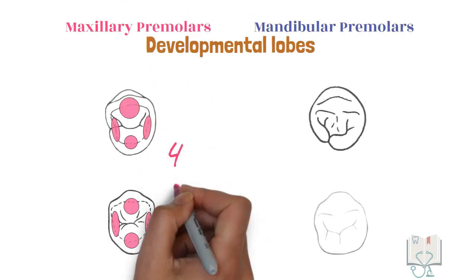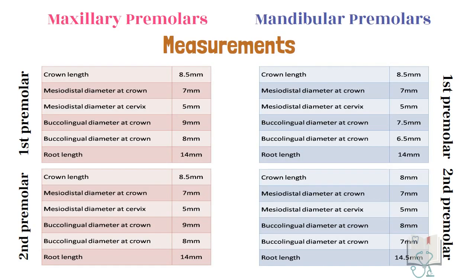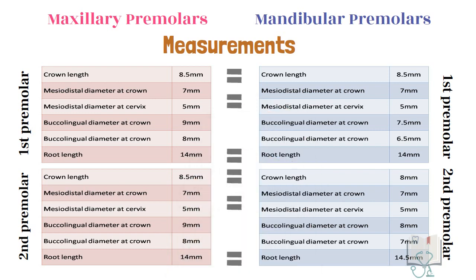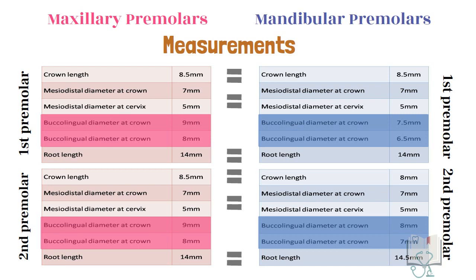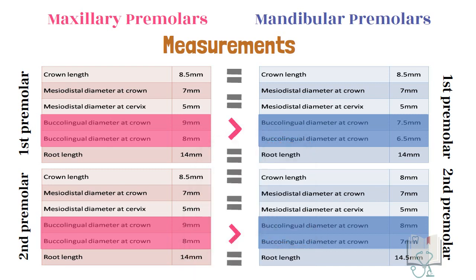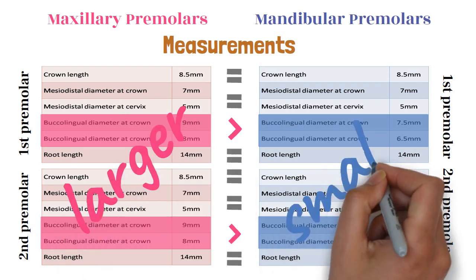Both maxillary premolars develop from four developmental lobes. However, in the mandible, only the first premolar develops from four lobes, as the second premolar develops from five developmental lobes. Coming to measurements, both maxillary and mandibular premolars are almost of equal dimensions from all aspects except buccolingually, where the maxillary premolars are bigger than the mandibular premolars. Therefore, in general, it can be said that maxillary premolars are larger than mandibular premolars.